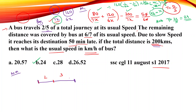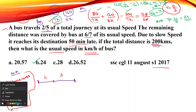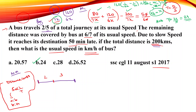Now, the second method. The key principle here is that the distance is constant, and the speed is inversely proportional to time. If the speed ratio is a to b, then the time ratio is b to a. When we change the speed, we can find how the time changes.